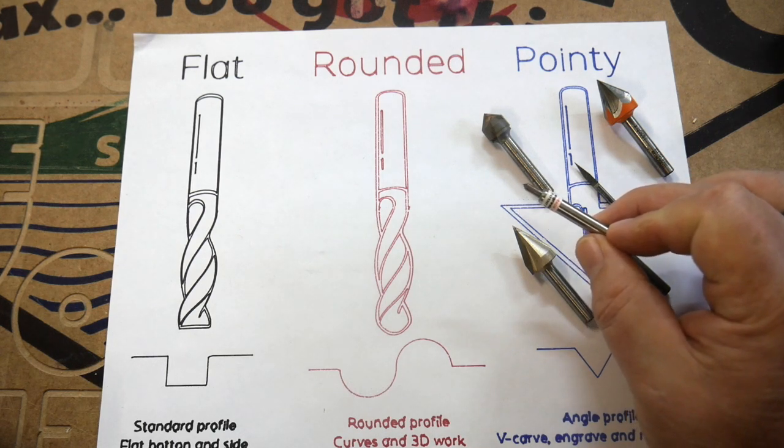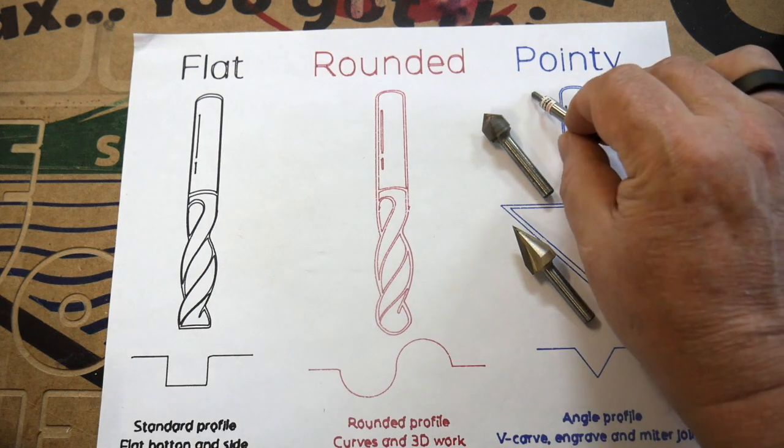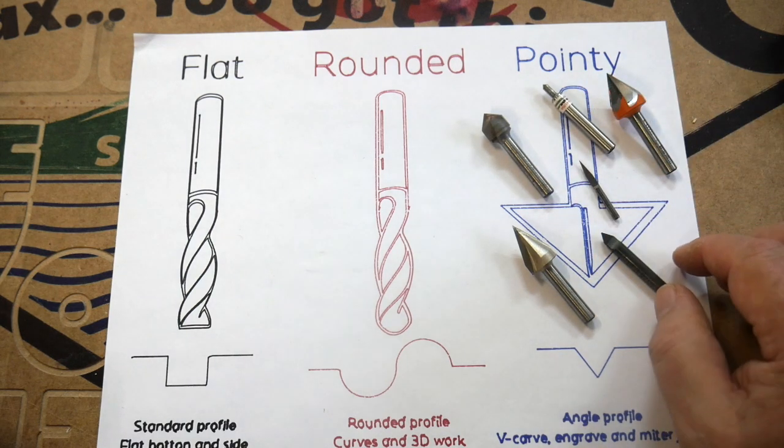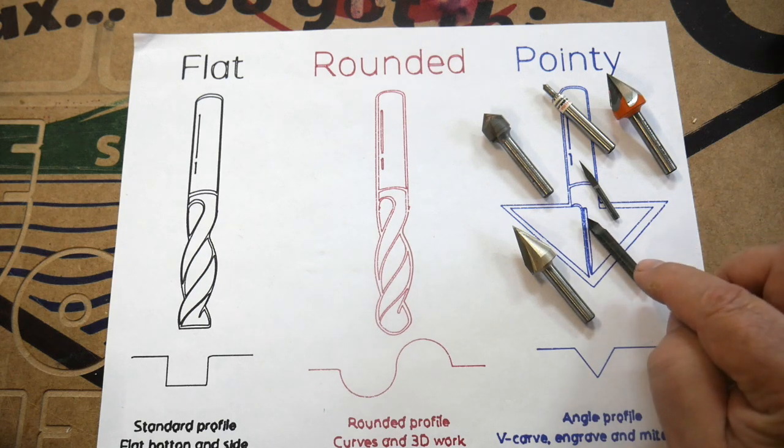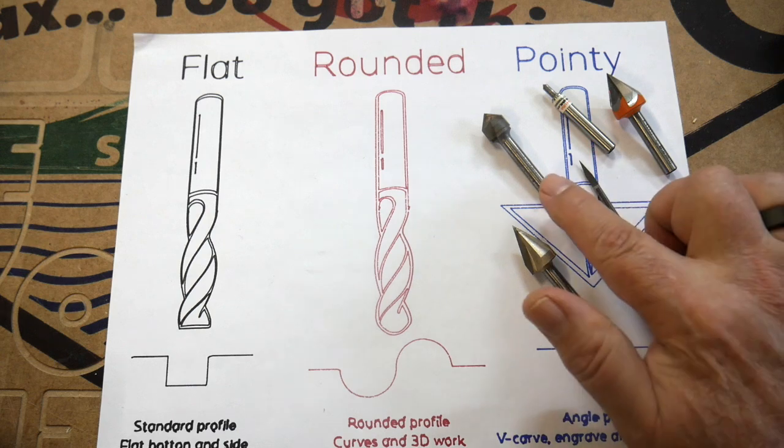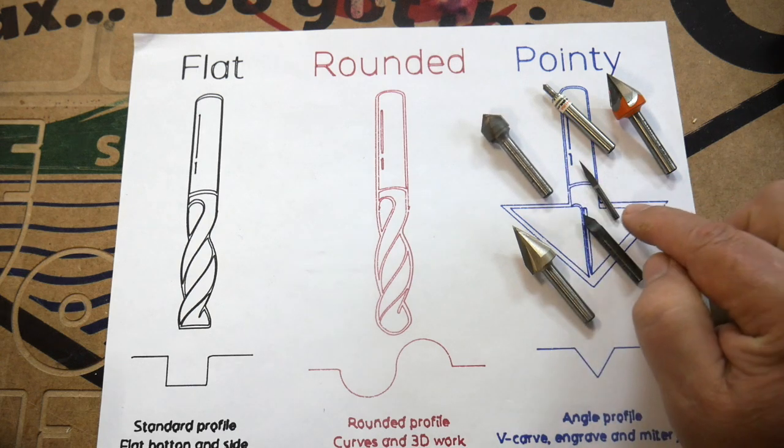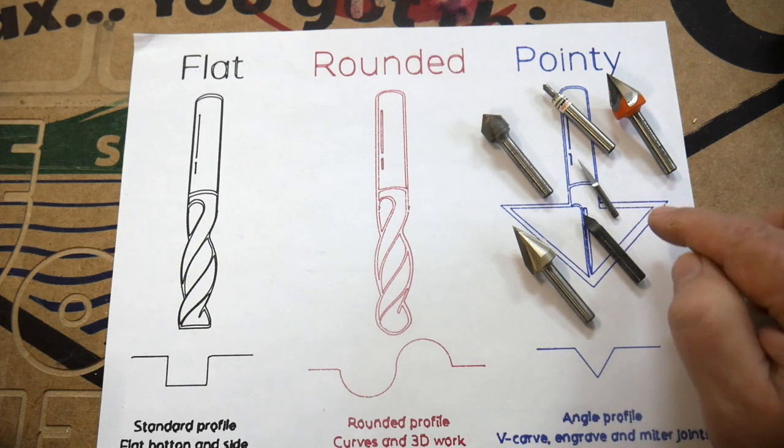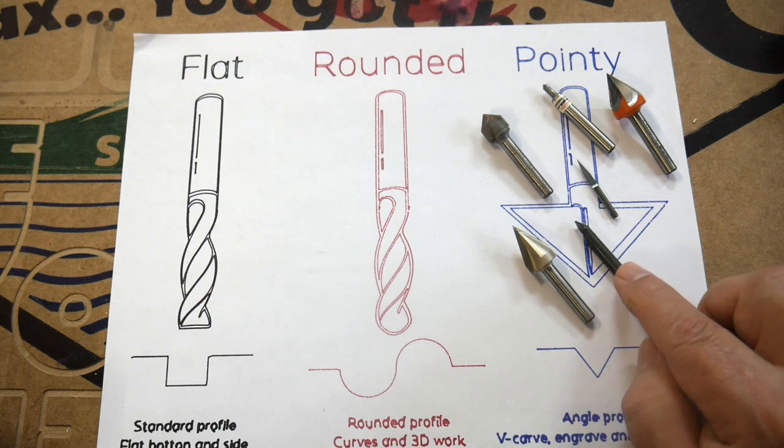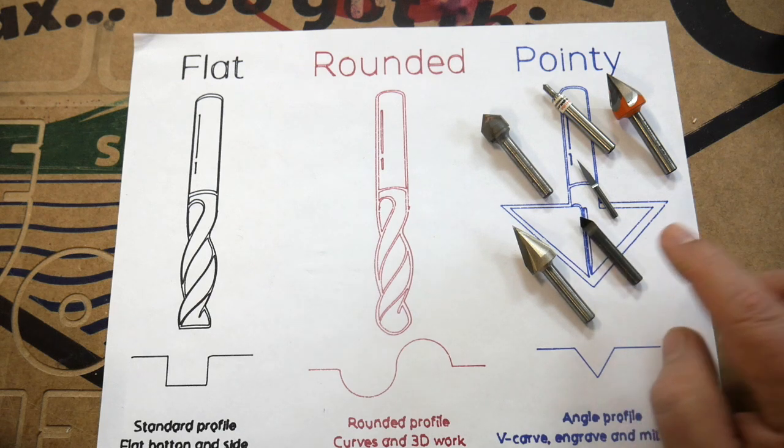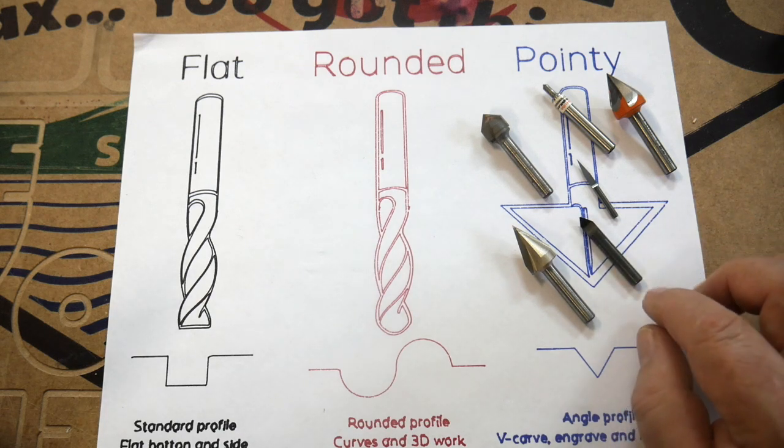Now one thing I haven't talked about right now is the shaft on these bits. You'll notice that this is a quarter inch shaft, this one is an eighth inch shaft, this one looks like a quarter inch shaft but it's actually a metric shaft. So you have to be careful when you're buying things on Amazon or eBay. Sometimes they carry a lot of metric stuff for people who weren't ruined by the U.S. educational system, and those will not fit in a standard quarter inch chuck.